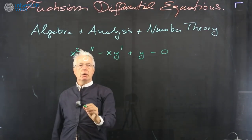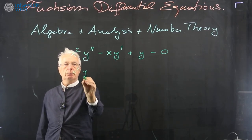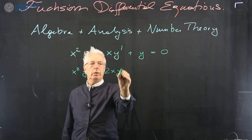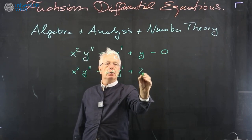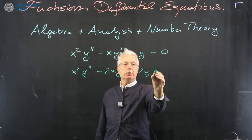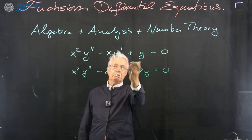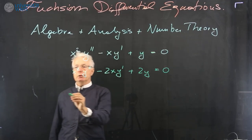Or you may modify slightly: x squared y double prime minus 2x y prime plus 2y equals 0. So you just change a little bit the coefficients and you want to solve.